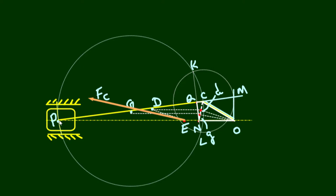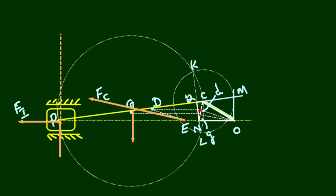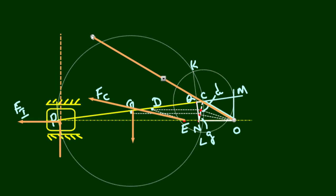Step 5: Identify forces at the smaller end of the connecting rod. The forces present are: inertia force of the piston Fi, normal force Fn (perpendicular to the line of stroke), and the radial force Fr acting away from the crank along the connecting rod direction. Weight of the connecting rod Wc acts downward. Extend the lines of action of Fr and Fn to intersect at a point — this intersection point is the instantaneous center I of the connecting rod.